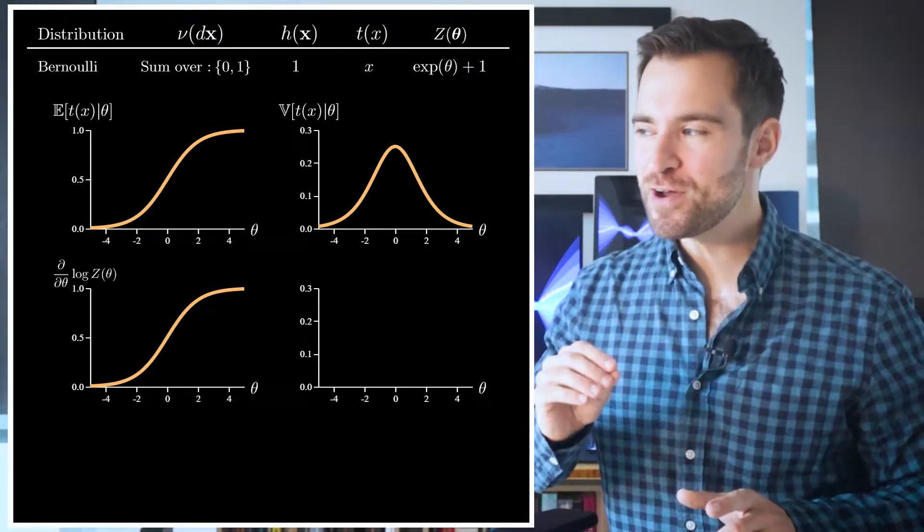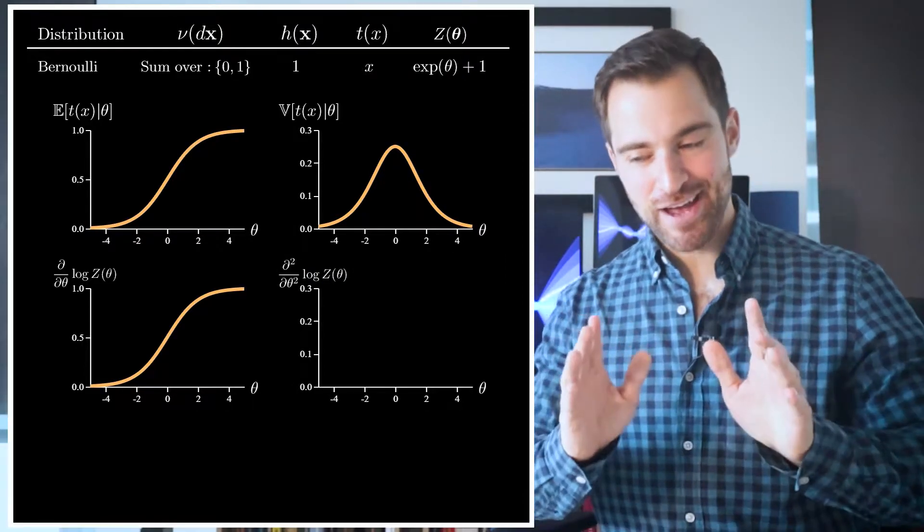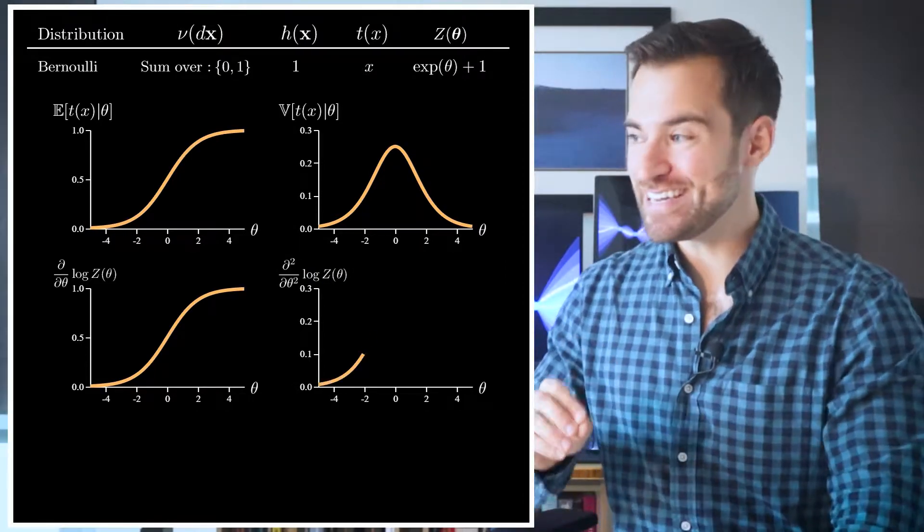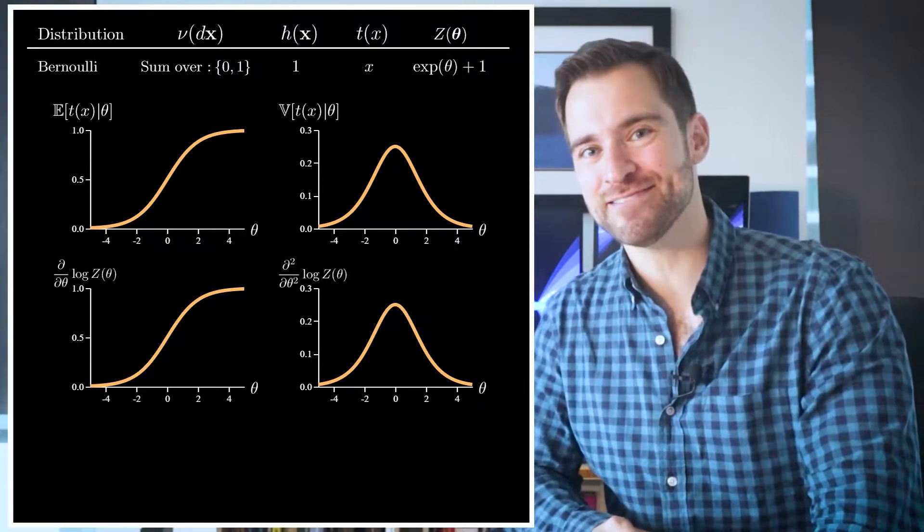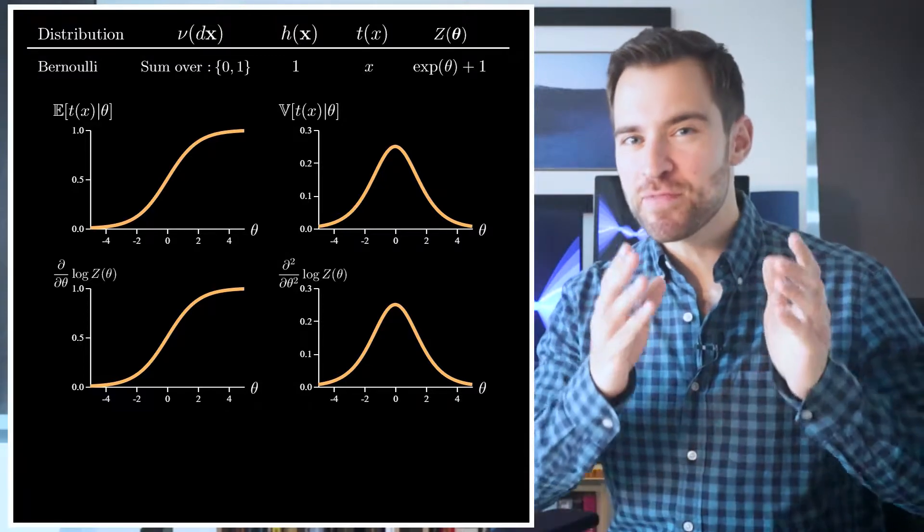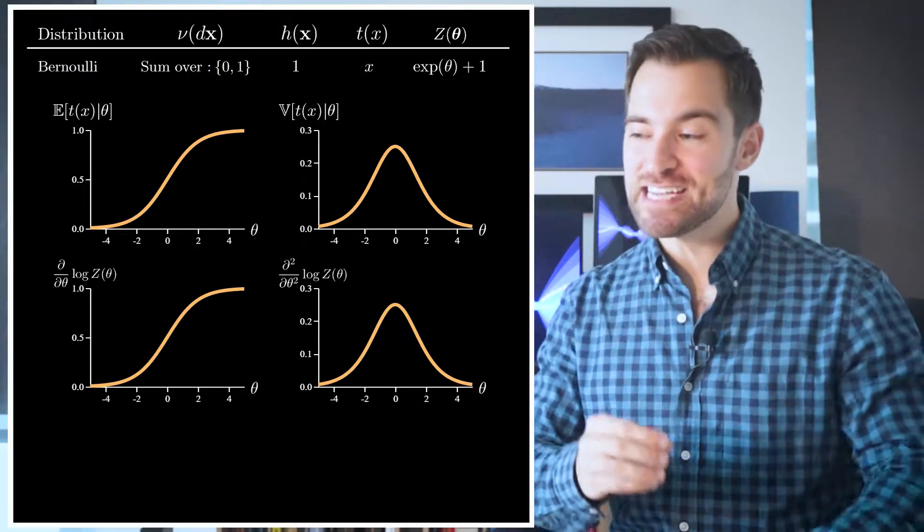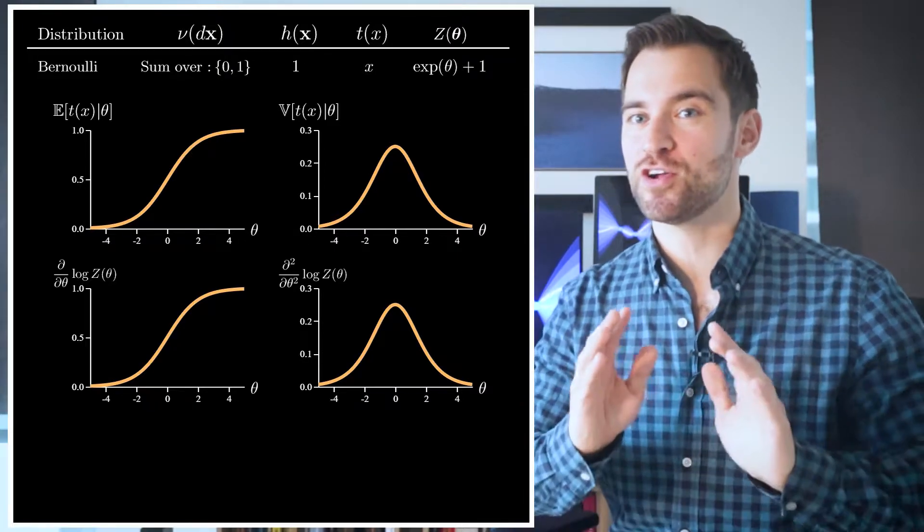But what about over here? Well, let's plot the second derivative of the log normalizer. And you get, you guessed it, this. Interesting once again. So, at least in this case, it looks like the functions that map from θ to the mean and variance of the sufficient statistics are the same as the first and second derivatives of the log normalizer.